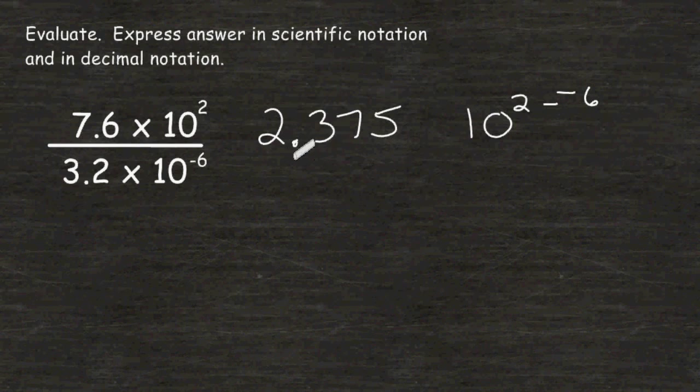So we have 2.375 times 10 to the power of 2 minus negative 6. And when you are subtracting a negative number, remember we have to change those into positive values. So now we can rewrite this as 2.375 times 10 to the eighth power.